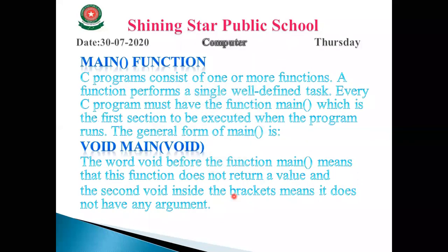Now let's move to the next slide: main function. In our previous lectures we discussed that the main function is written after the preprocessor directives. When we write a program in C language, our first step is writing the preprocessor directives starting with hash. Then we write, for example, hash include stdio.h, then void main with parentheses, and then the curly brackets.